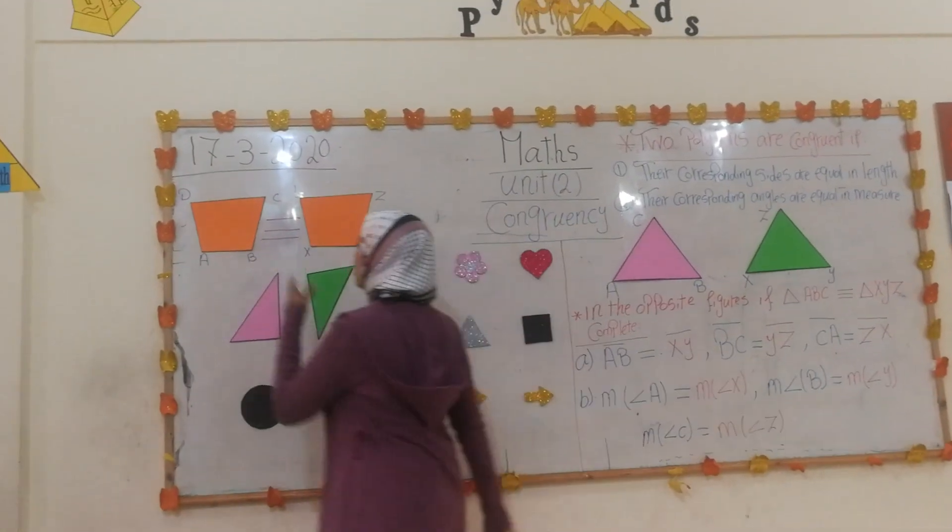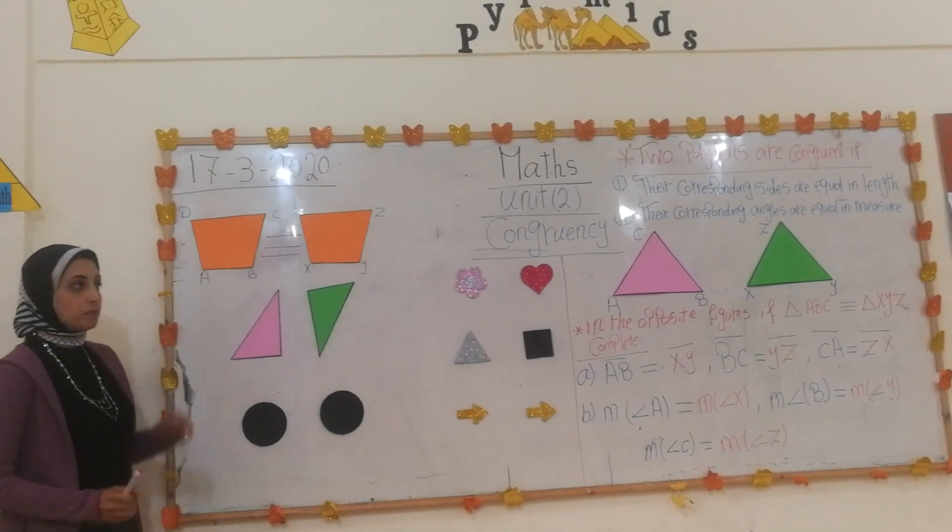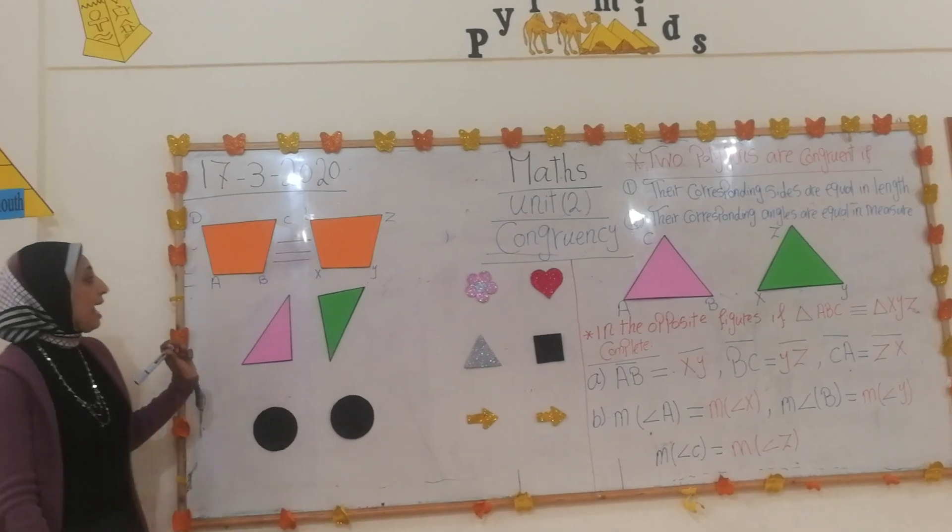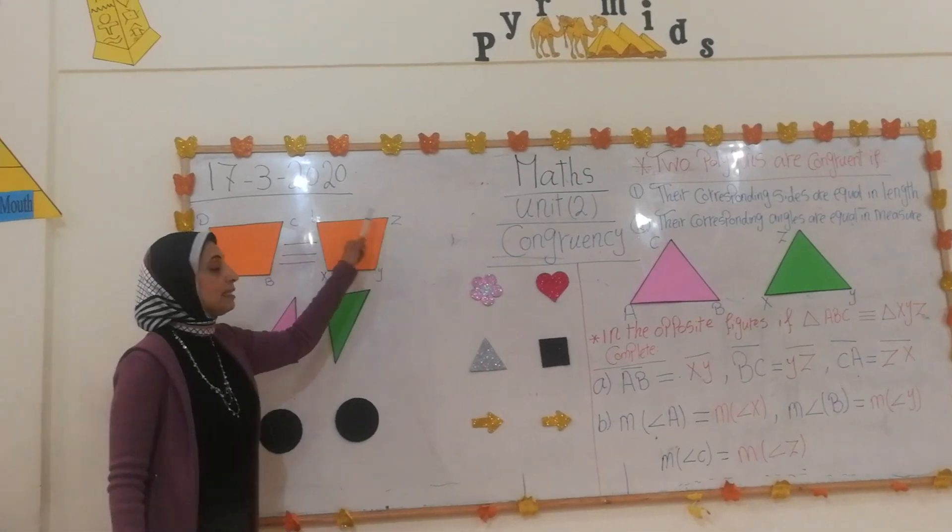For example, if we have two polygons like this: A, B, C, D, and X, Y, Z, L.